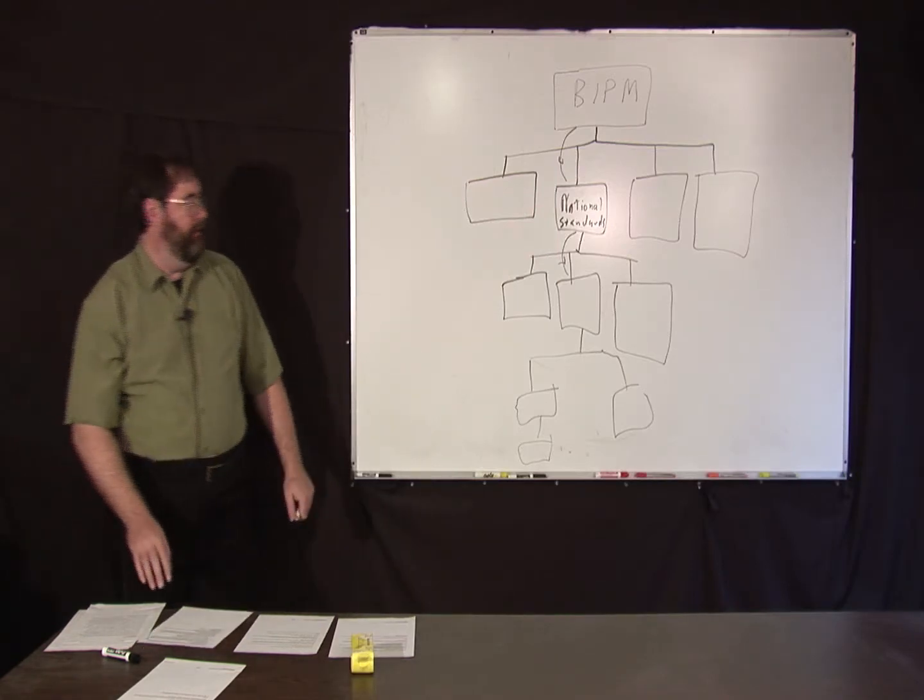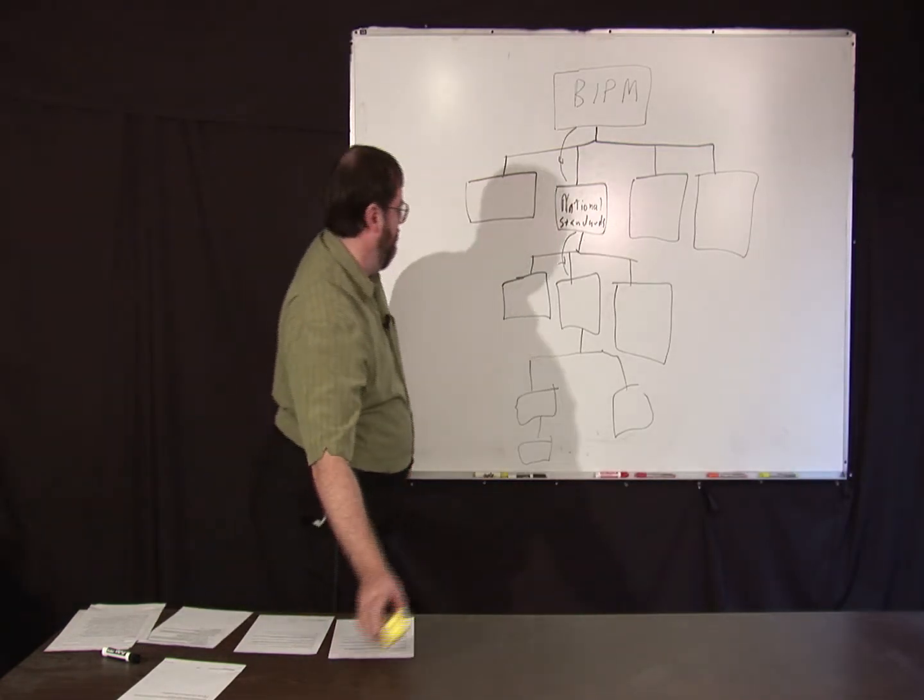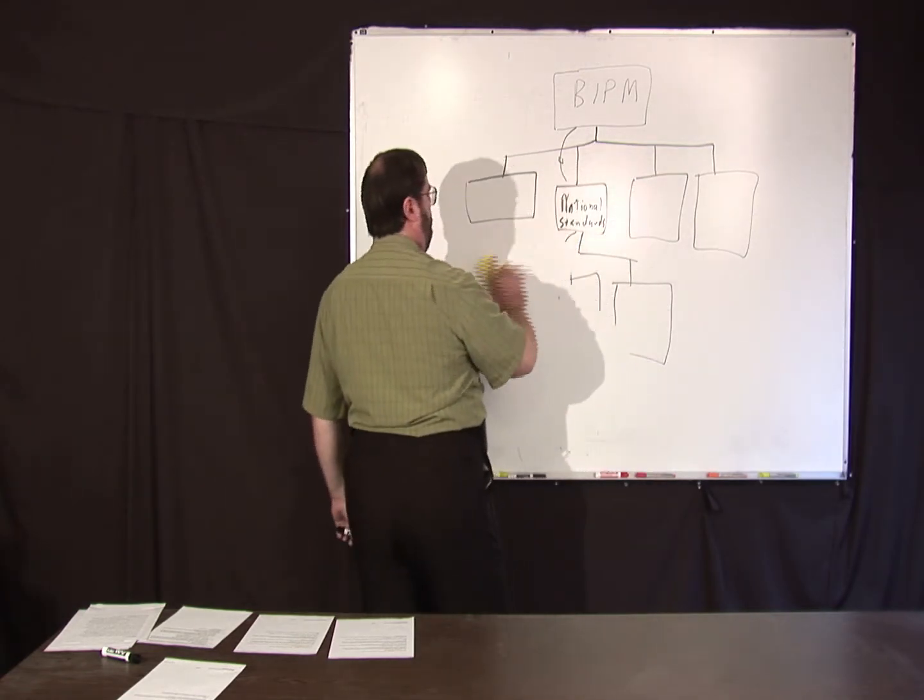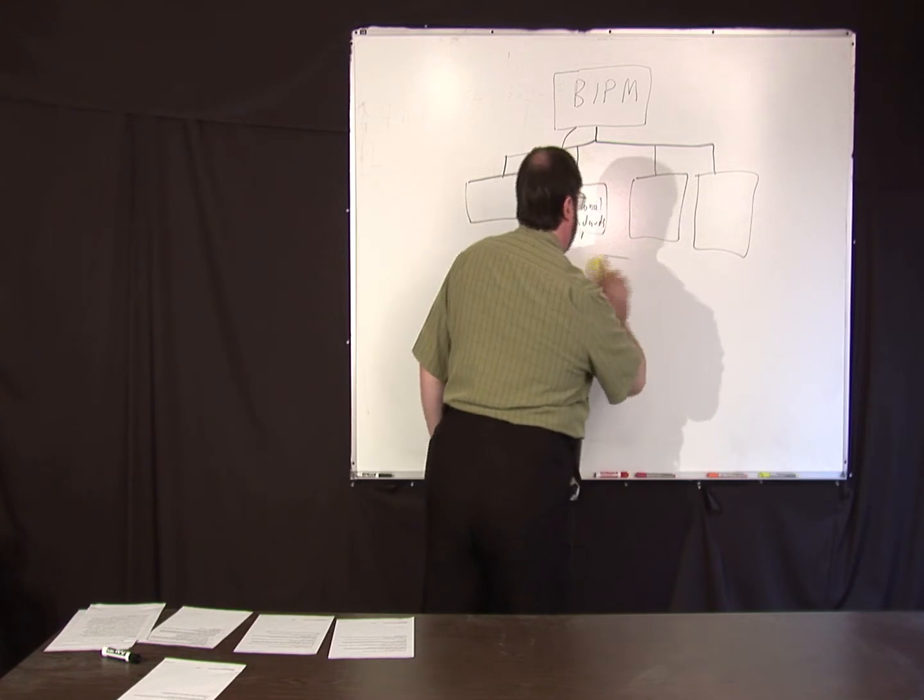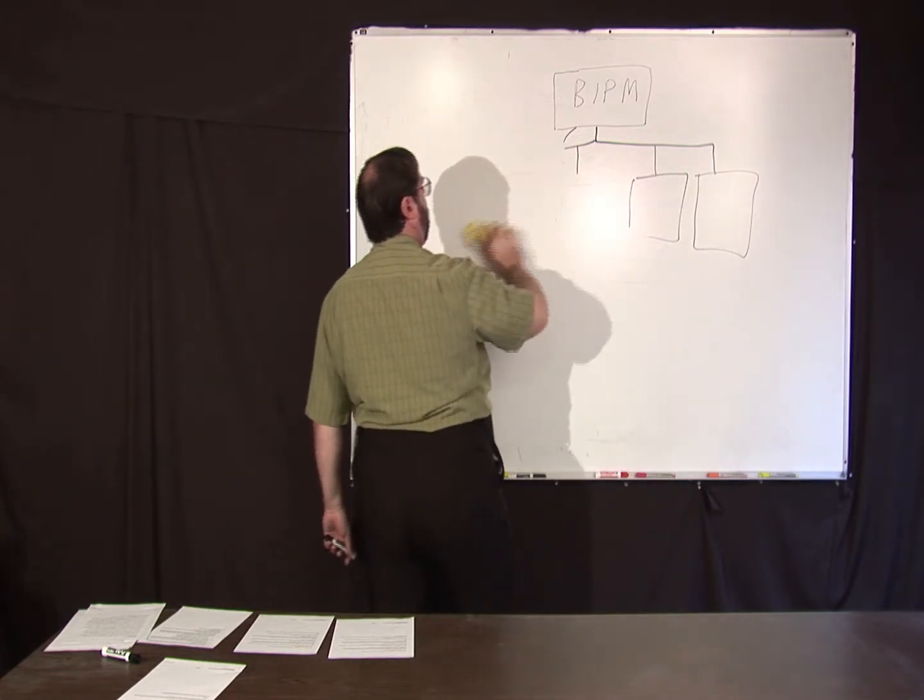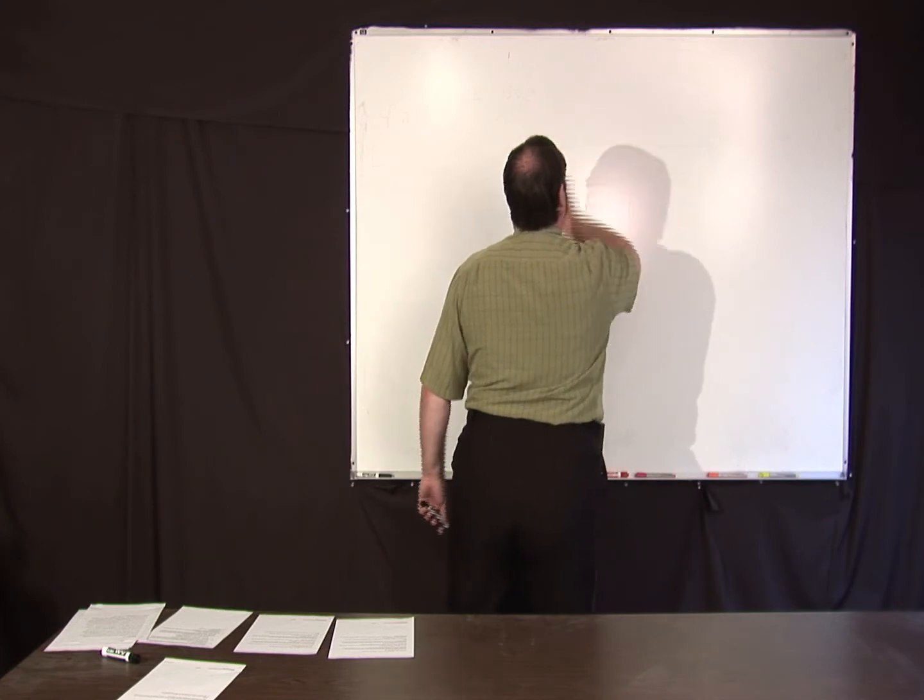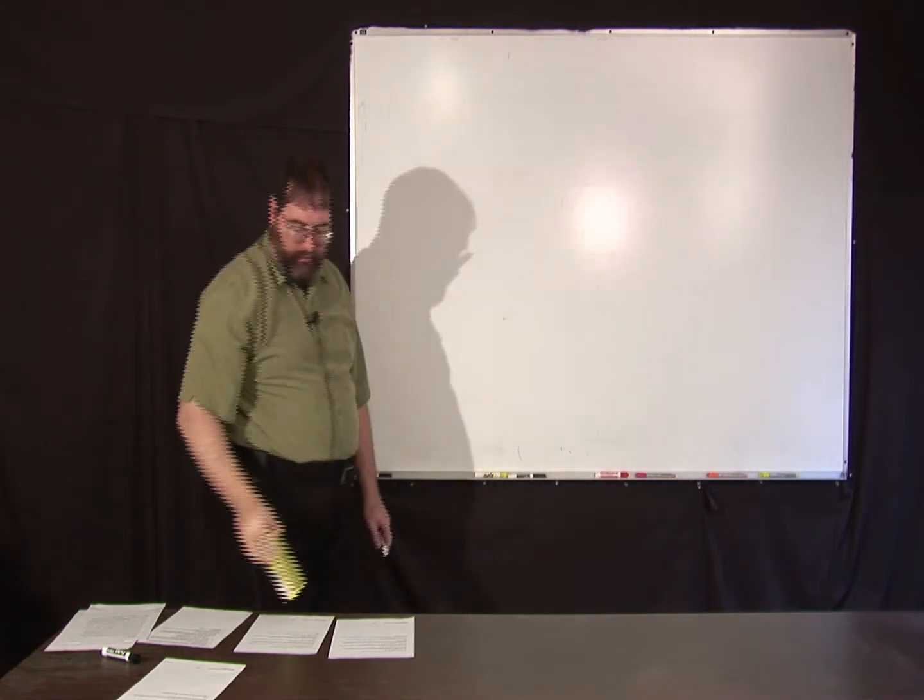Now, there are other ways to get traceability other than just direct intercomparison, a chain of intercomparison to standards at the BIPM. But we're going to talk about other types of standards.